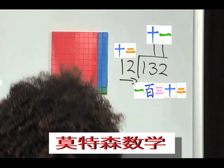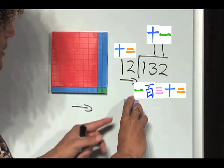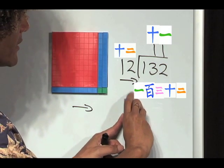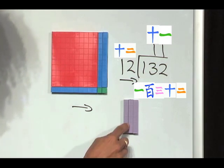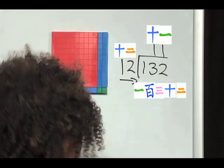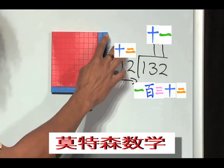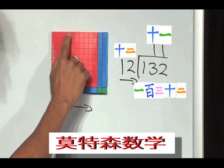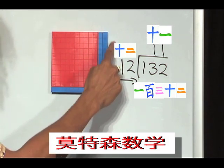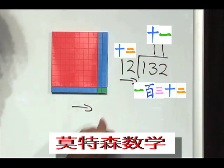Now, remember, when we were doing 18 — the sixes and the threes — we just counted the edges, 3 and 6. We didn't count the insides. Well, it's the same thing here where we don't count the inside. We just count the edges. If this edge is 12, and you can see that this side is also 12, this side is 11. That's it. If this side is 12, this side must be 11.